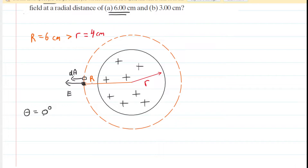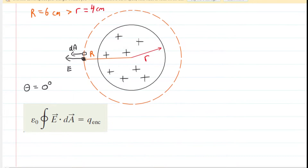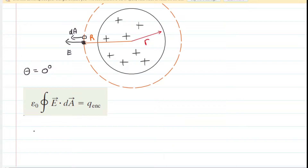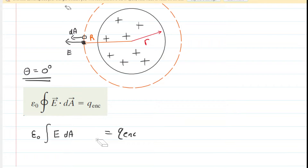That angle will become important momentarily. Looking at the equation for Gauss' Law, we have a dot product, which can be written as the magnitude of the electric field multiplied by the magnitude of the little area vector, times the cosine of the angle between those two vectors. Since the angle between those two vectors is zero degrees, and the cosine of zero degrees is one, we can actually remove that cosine term.